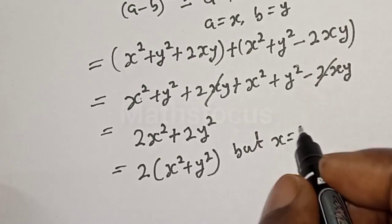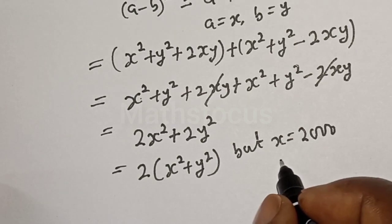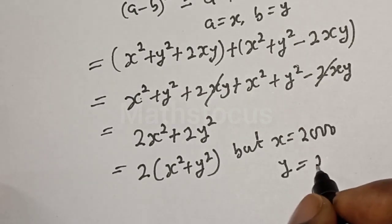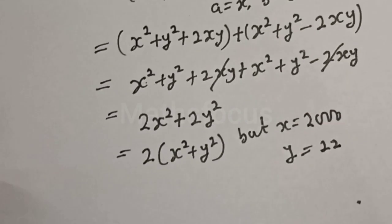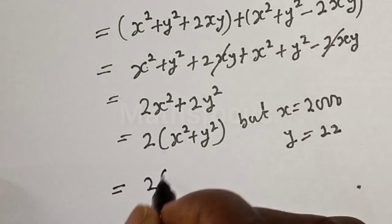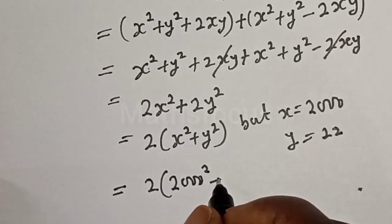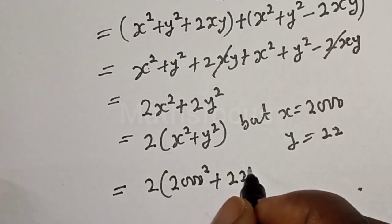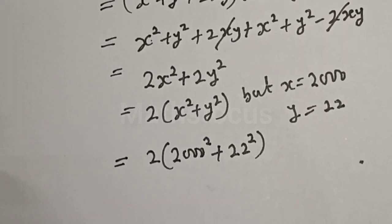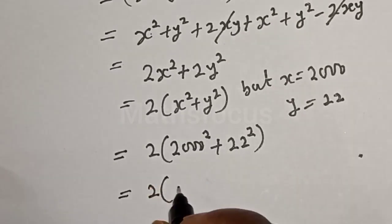Now let's substitute: this equals 2(2000² + 22²). This equals 2 multiplied by 2000 squared plus 22 squared.